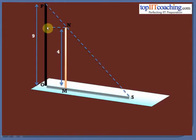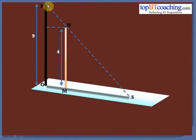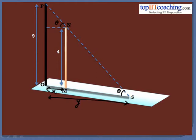We have a lamp post of height 9 feet. This represents the lamp post, and this is the man whose height is 4 feet. The man is moving away from the lamp post, and this is the length of the shadow at any instant formed by the lamp post. We have to calculate the rate at which this shadow is moving. At any instant, the distance from the lamp post to the man is x, and the length of the shadow is y. If we say this angle is theta, then this angle would also be equal to theta, and this length is equal to 4.